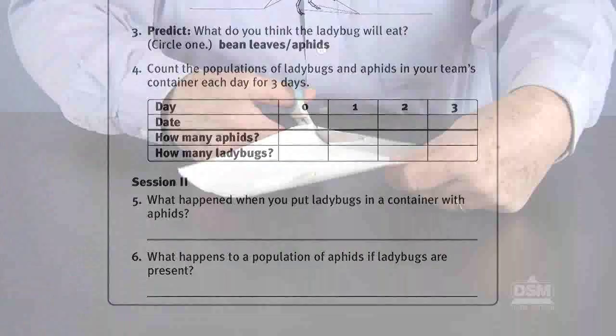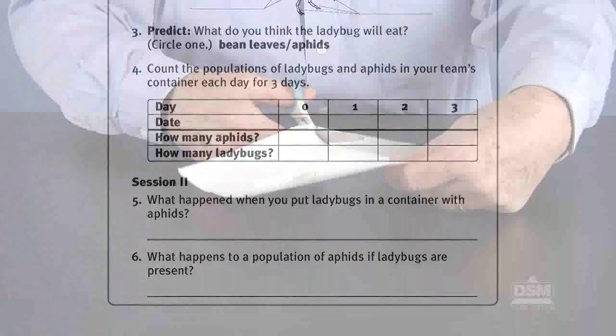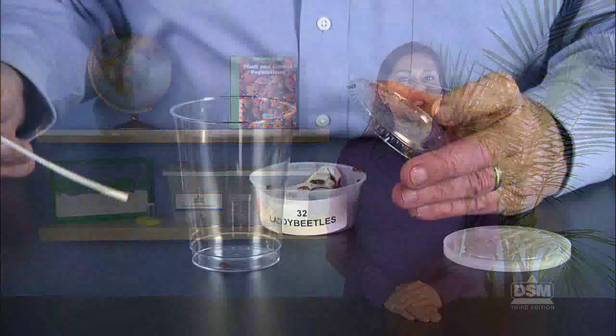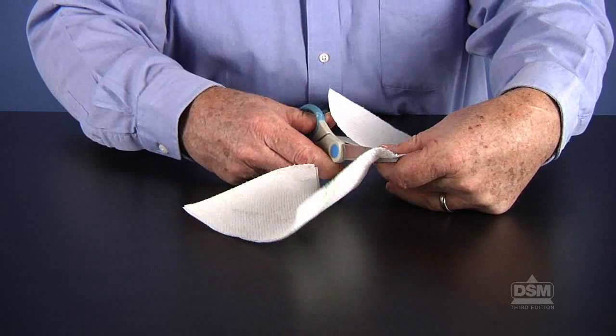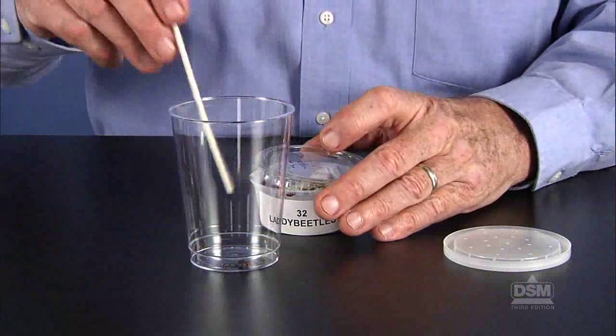To prepare for session 1, make a copy of activity sheet 10 for each student. Cut or tear paper towels into quarters, one piece for each team. For each team, use a pipe cleaner to put 2 ladybugs into each of 2 containers, and place a lid on each to prevent the ladybug's escape.